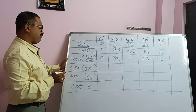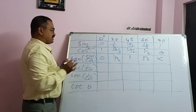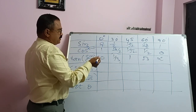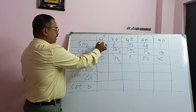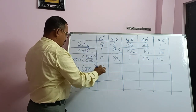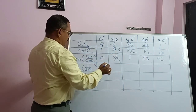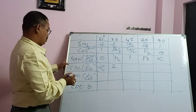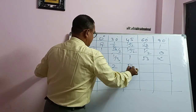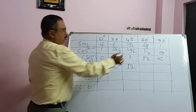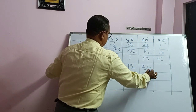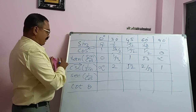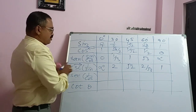Now cosecant theta. We know that cosecant theta is the inverse of sin theta. So just take the reciprocal of these values and we will get cosecant theta. Reciprocal of 0 is infinity, reciprocal of 1/2 is 2, reciprocal of 1/√2 is √2, reciprocal of √3/2 is 2/√3, and reciprocal of 1 is 1. Here also we can apply the left-to-right to right-to-left formula.